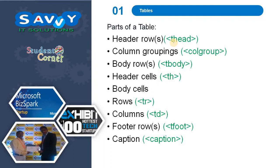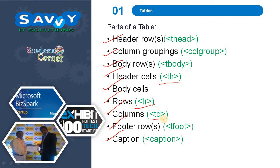Parts of a table include: head rows, column groups, body rows, header cells, body cells, rows, columns, footer rows, and captions. I think rarely people know about TH, TR and TD, but here we are providing more than this.